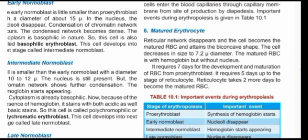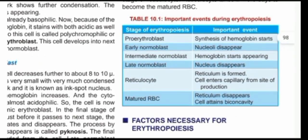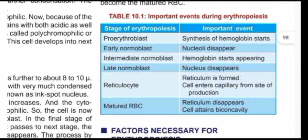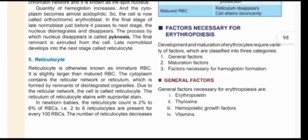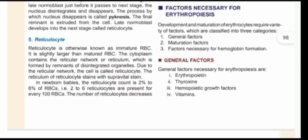There is a table indicating the peculiar changes in the various steps of erythropoiesis. The last thing is the factors necessary for erythropoiesis. You divide them into general factors, maturation factors, and factors necessary for hemoglobin formation. The general factors include erythropoietin, thyroxine, hemopoietic growth factors, and vitamins. Erythropoietin is produced in the kidney and is the most important general factor for erythropoiesis — it stimulates the process. Thyroxine is involved in metabolic activities, and since red blood cell production involves metabolic activity, thyroxine tends to increase production.